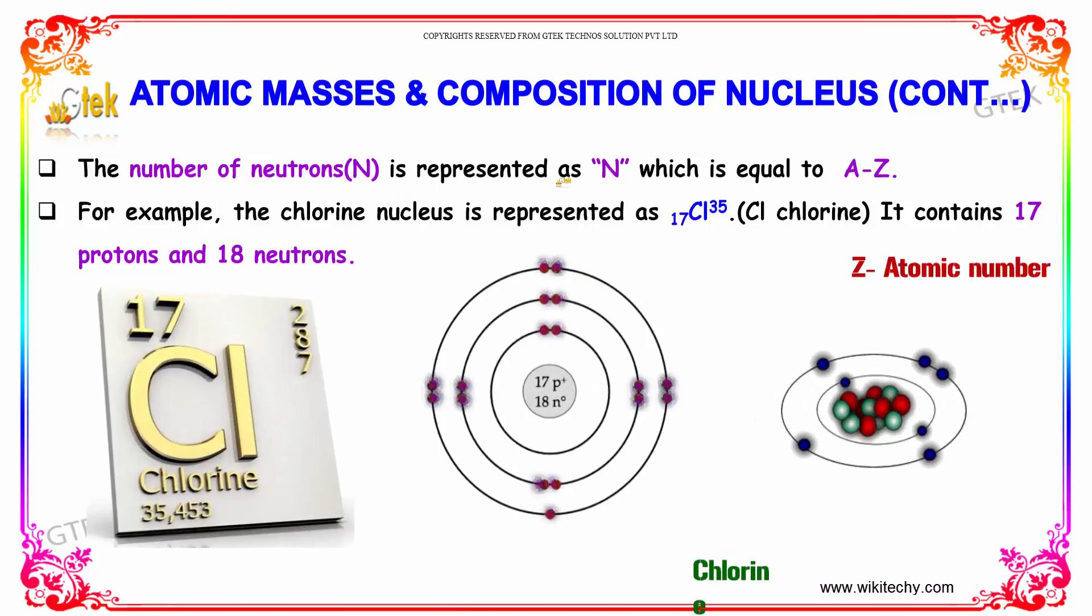The number of neutrons is represented as N, which equals A minus Z. For example, the chlorine nucleus is represented as 17Cl35.